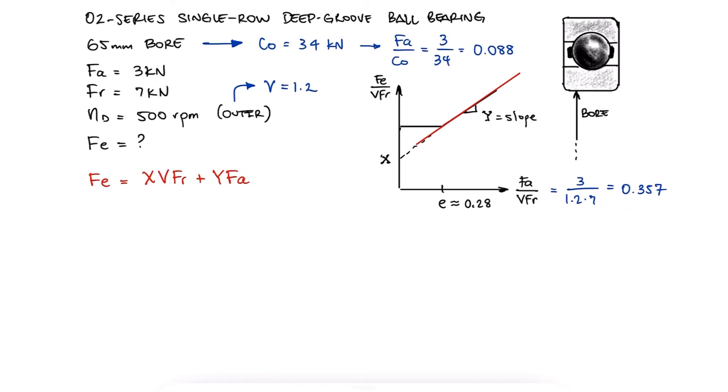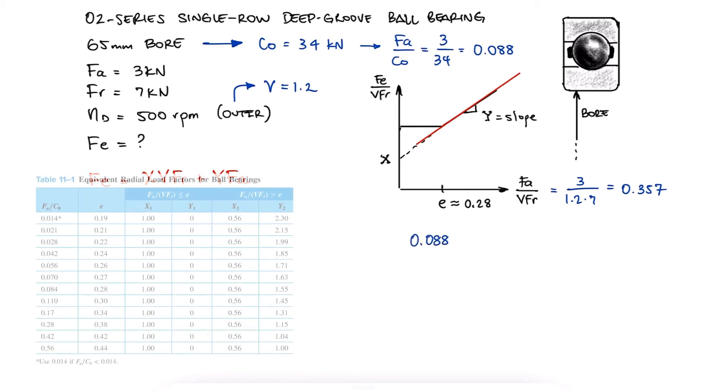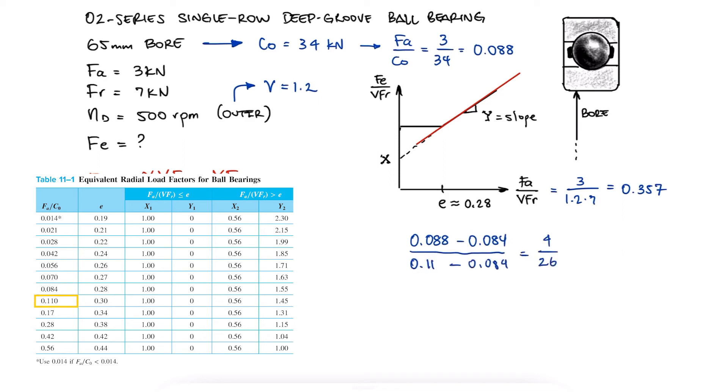For an FA over C0 value of 0.088, which is 4.26 of the way from 0.084 and 0.11, we can interpolate for the value of capital Y.